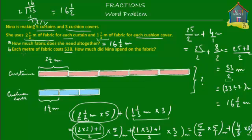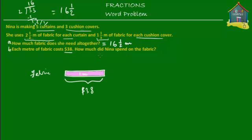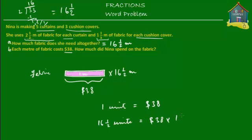Now what's next? Each meter of fabric costs $38, so how much did Nina spend on the fabric? Let's make some room. One meter of fabric costs $38. Nina used 16 and a half meters of fabric, so how much did she pay for 16 and a half meters? If one unit costs $38, then 16 and a half units will obviously cost $38 times 16 and a half.